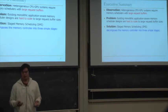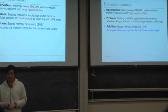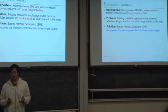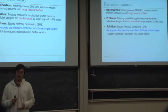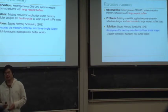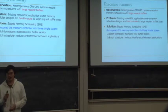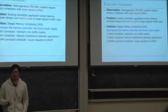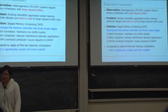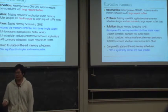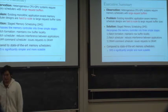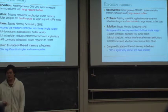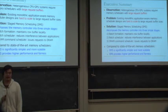Our solution is a mechanism called Stage Memory Scaling, or SMS, that decomposes the memory controller into three simpler stages. Stage one is the batch formation that maintains row buffer quality. Stage two is the batch scheduler that reduces interference between different applications. Stage three is the DRAM scheduler that issues requests to DRAM. Compared to state-of-the-art DRAM schedulers, SMS is significantly simpler to design and provides high performance and fairness.